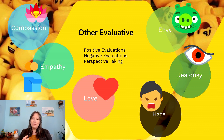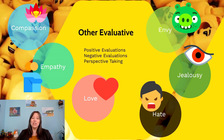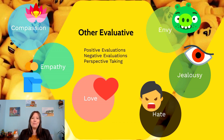Another type of positive other-evaluation is love — love, infatuation, or positive attachment — basically the idea that you think very highly of a person, you wish them the best, and you want to see good things happen for them. This is judging someone in a positive way and feeling warmly toward them.